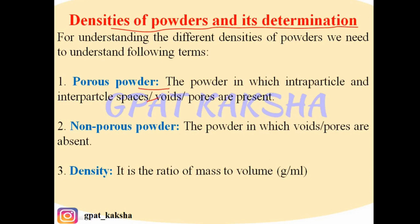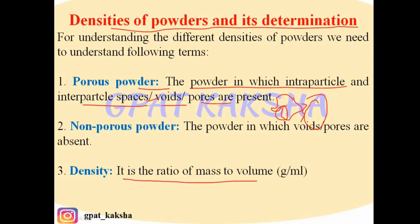Porous powder is the powder in which intraparticle and interparticle spaces, voids, or pores are present. Nonporous powder is the powder in which voids and pores are absent. Density is simply the ratio of mass to volume — mass upon volume — of a particular substance.